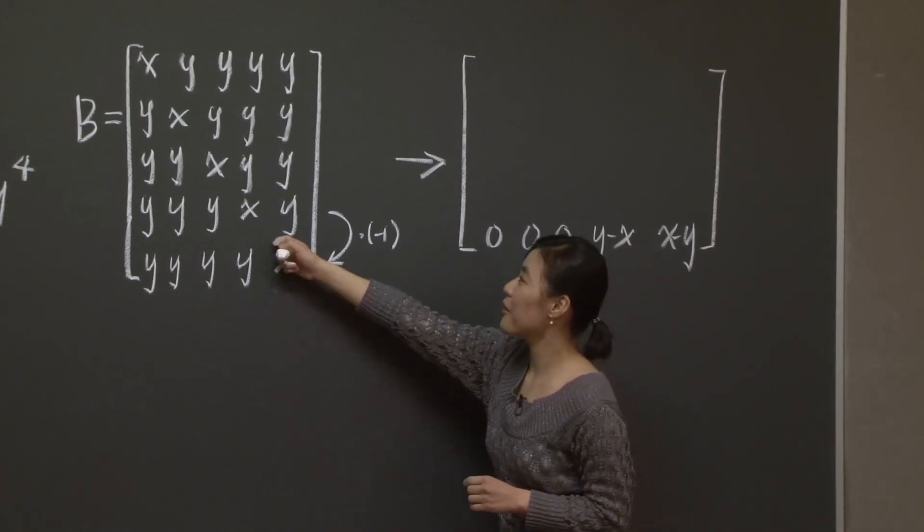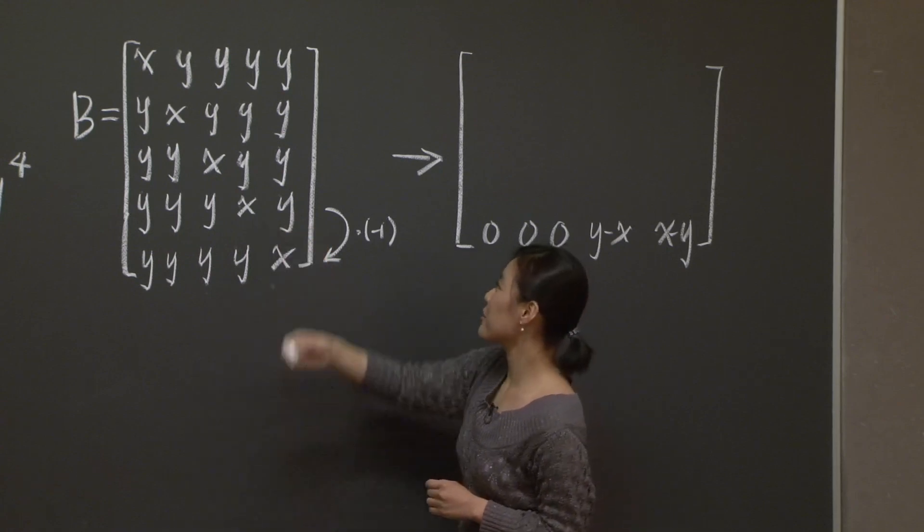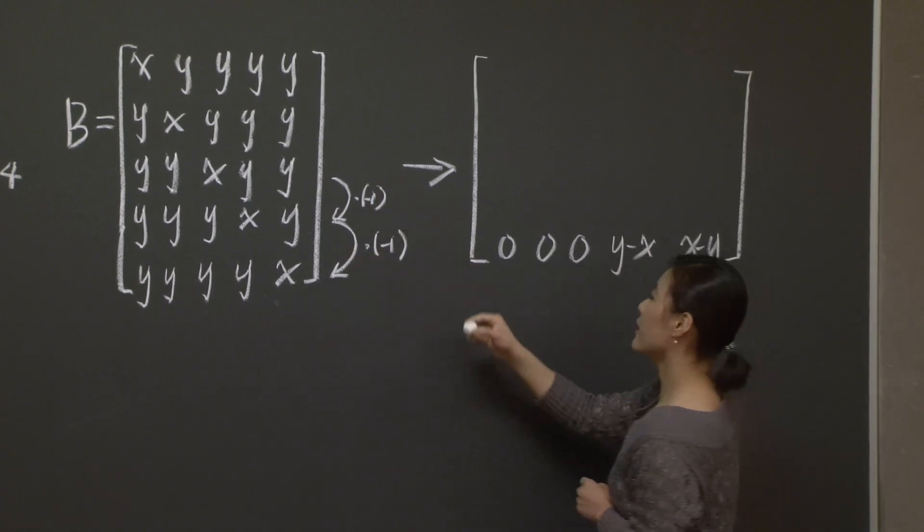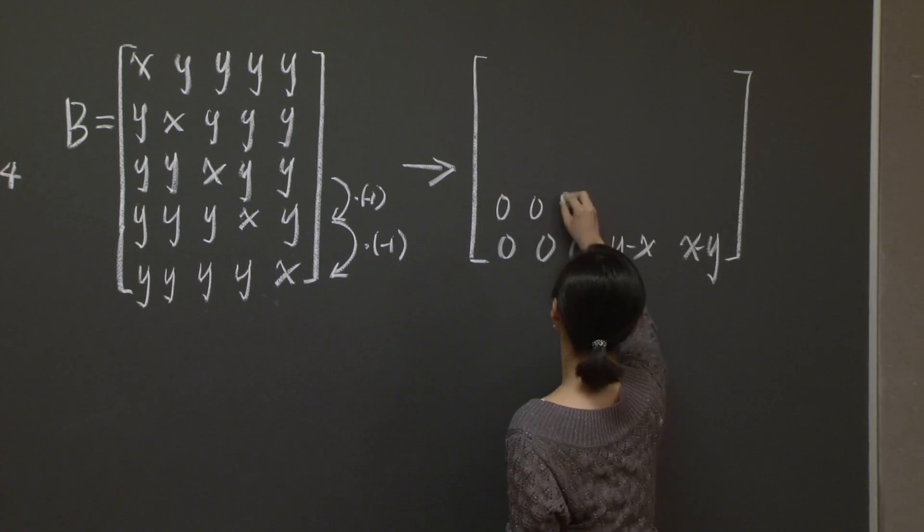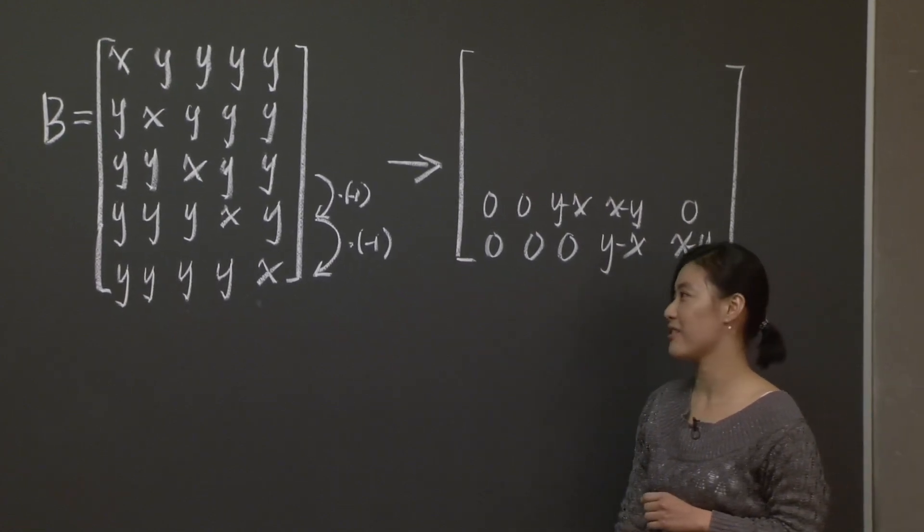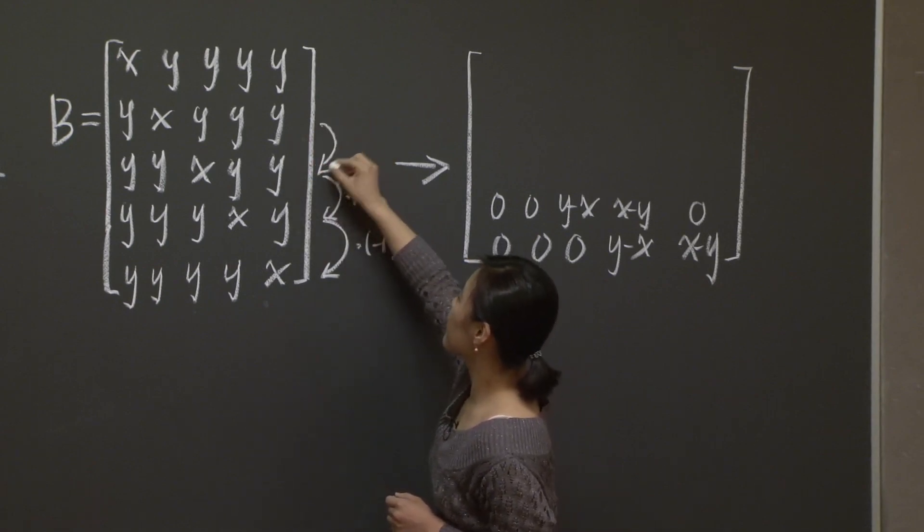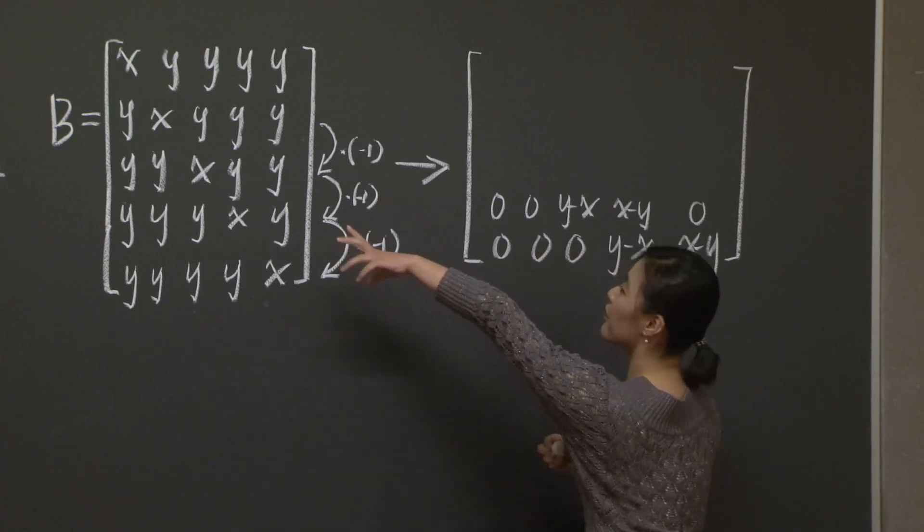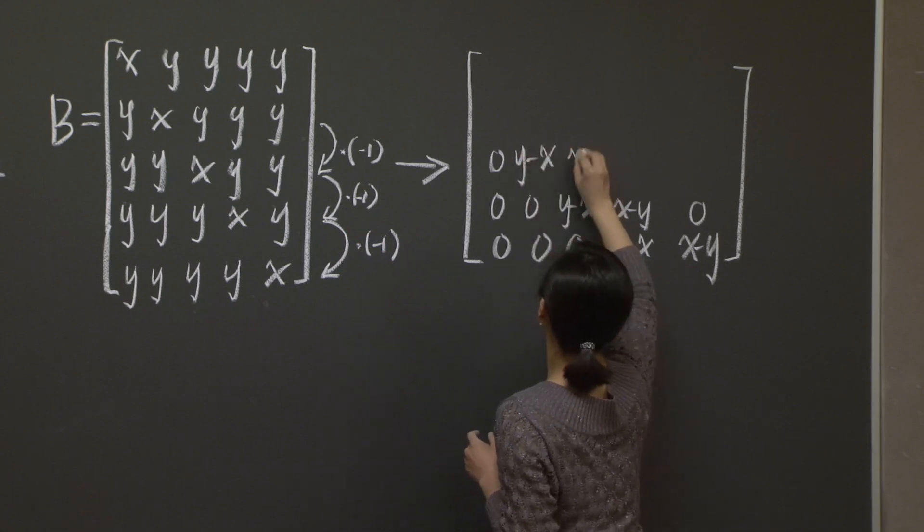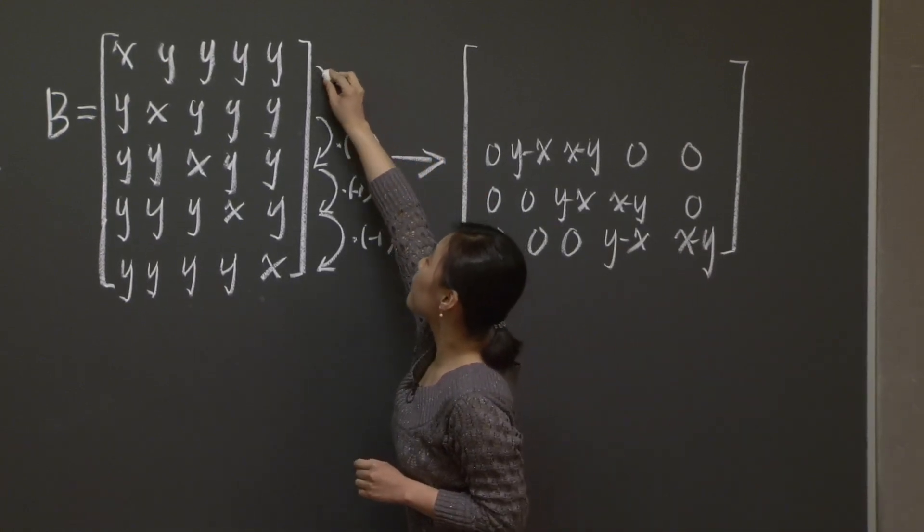And it's similar with the fourth row and the third row. They have common entries here, here, and here. So you subtract the third row from the fourth row. You update the fourth row to 0, 0, y minus x, x minus y, 0. Again, three zero entries. And same thing happened to the second row and the third row. So you subtract the second row from the third row and your new third row will become 0, y minus x, x minus y, 0, 0. Finally, you subtract the second row from the second row.